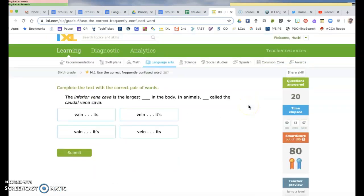The inferior vena cava is the largest vein in the body. This means like vanity or like vain, like you like to look at yourself in the mirror type thing. So we're looking for vein from these two, because that's like the thing that runs through your body and delivers blood. In animals, blank called the. So I want it is, so I want it's apostrophe s.